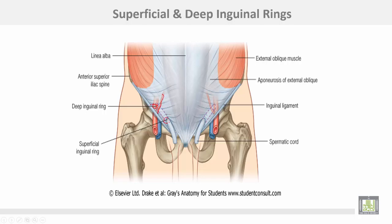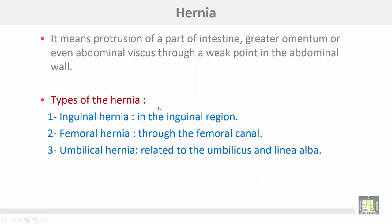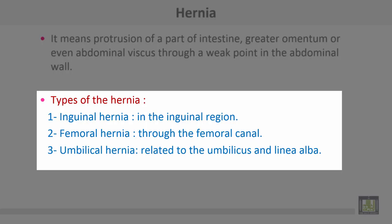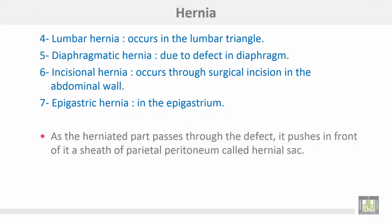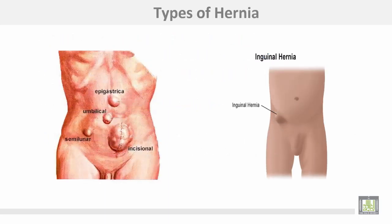The deep inguinal ring is lateral to the inferior epigastric artery. Hernia means protrusion of a part of intestine, greater omentum, or even abdominal viscus through a weak point in the abdominal wall. Types of hernia in the inguinal region: inguinal hernia, femoral hernia through the femoral canal, and umbilical hernia. Lumbar hernia occurs in the lumbar triangle. Diaphragmatic hernia is due to a defect in the diaphragm. Incisional hernia occurs through surgical incisions in the abdominal wall. Epigastric hernia occurs in the area of the epigastrium. As the herniated part passes through the defect, it pushes in front a sheath of peritoneum called the hernia sac.